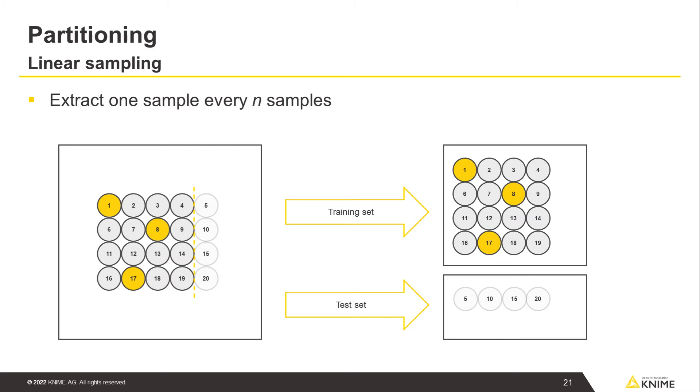Partitioning should be the first step you take in data preparation. Indeed, in order to avoid train-test contamination, which can cause inadequately optimistic model evaluation, all further data transformations should be performed exclusively on the training set and then only applied to the test set.